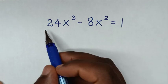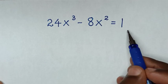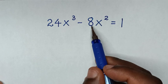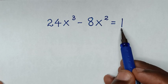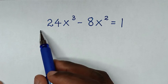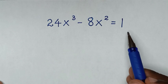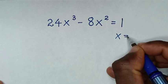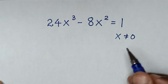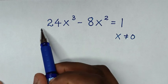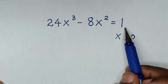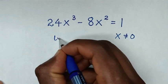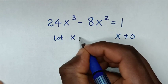Hello, you are welcome to solve this math problem which is 24x³ minus 8x² is equal to 1, to find the values of x from this equation. First we should know that x is not equal to 0, because if x is 0 it will not satisfy this equation.